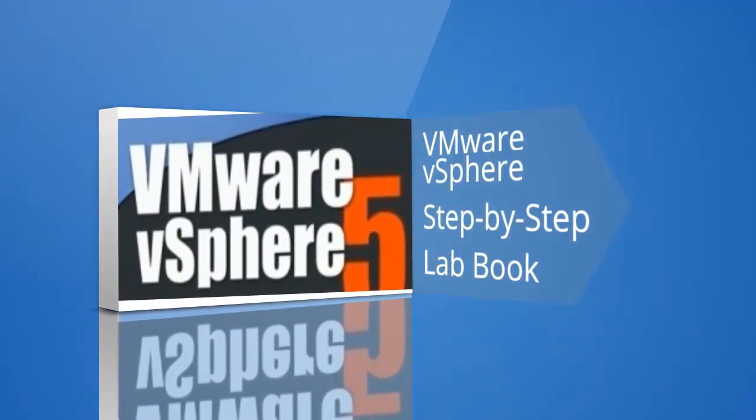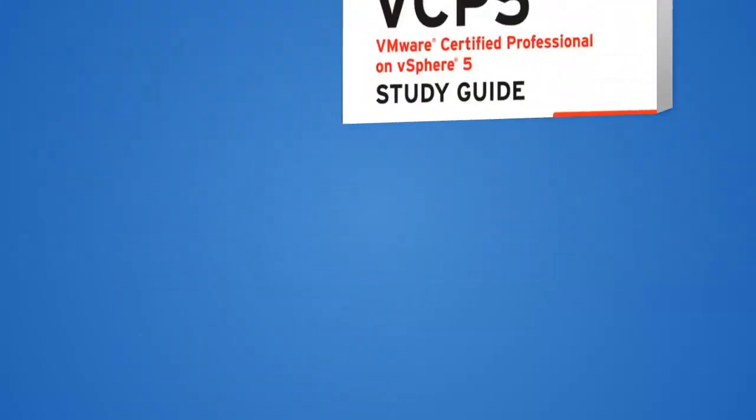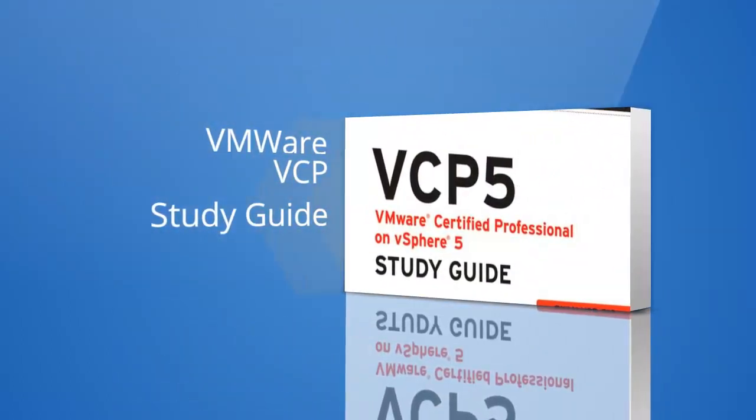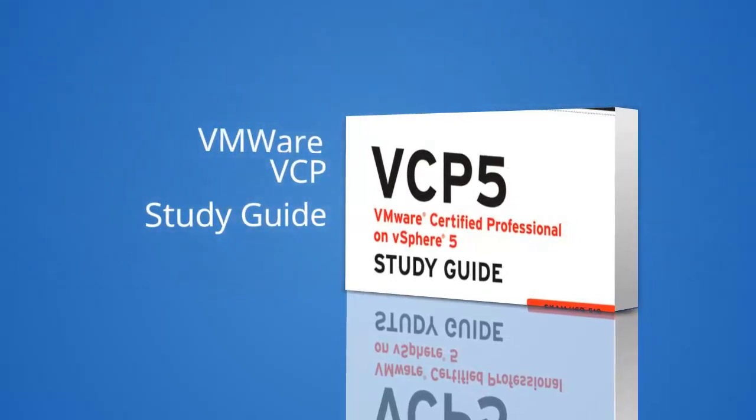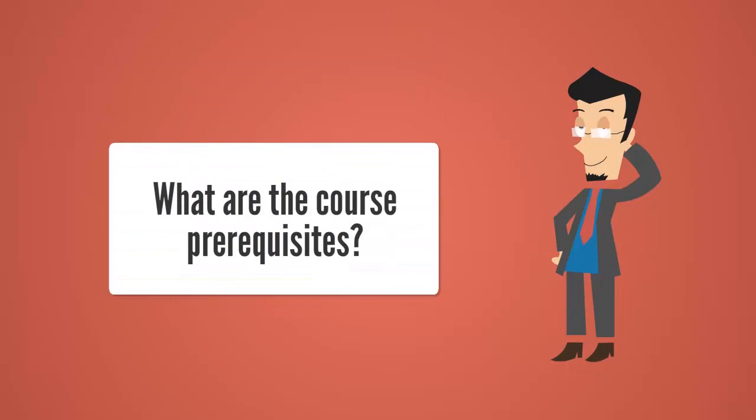In terms of supporting materials, you will receive two books. Number one is the VMware vSphere Step-by-Step Lab Book, and number two is the VMware VCP Study Guide. The Lab Book will help you to install and configure VMware's virtual infrastructure. It's a step-by-step lab book with lots of exercises that are easy to follow, even if you have no prior VMware experience. The VCP Study Guide book covers every single objective of the VCP exam, as outlined in the exam blueprint.